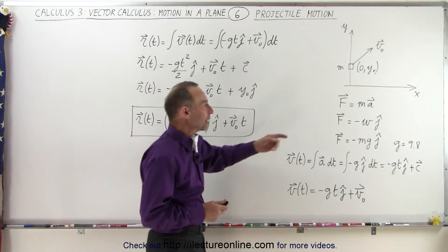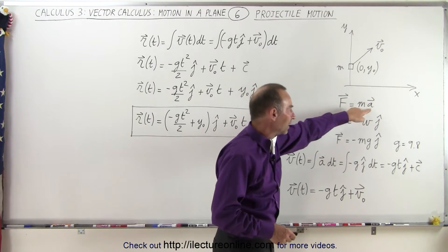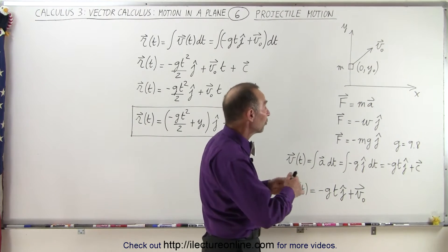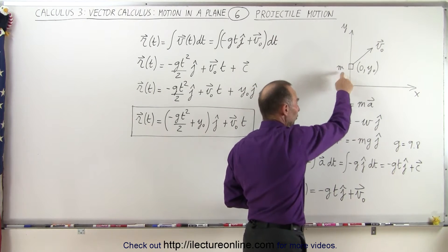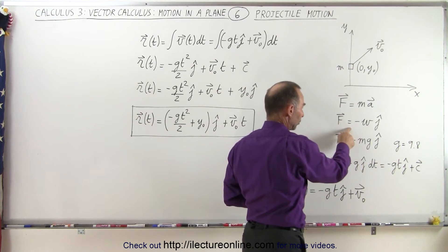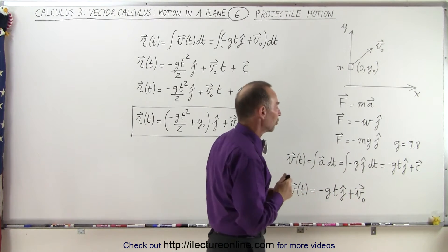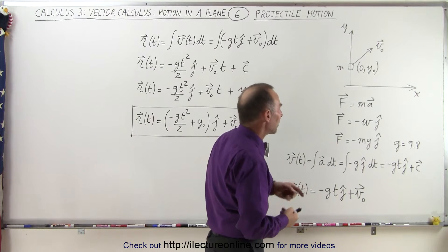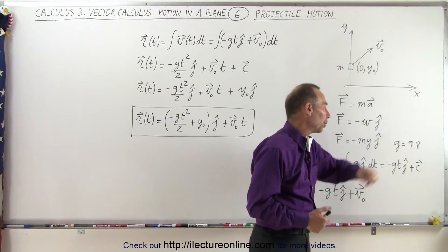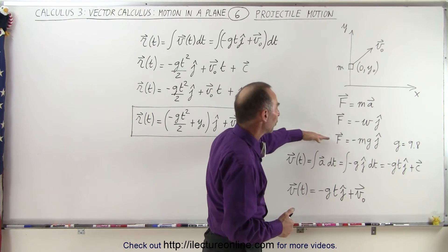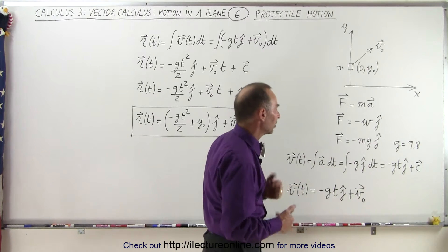Well, first of all we start with the equation F equals ma, where the force is a vector and acceleration is a vector. In this case the force is the force of gravity, which is equal to the weight of the object. So we can say that the force is going to be equal to minus the weight in the j direction — minus because it's acting in a downward direction — and the weight can be described as the mass times acceleration due to gravity, with g being 9.8 meters per second squared. So we can write the force equals mass times acceleration in the j direction like that.